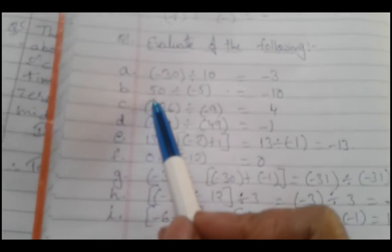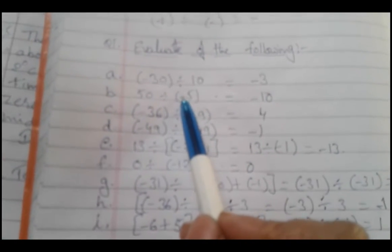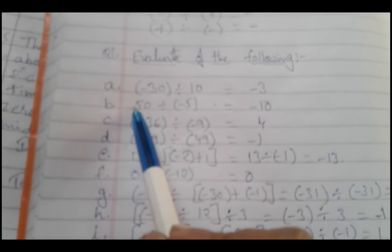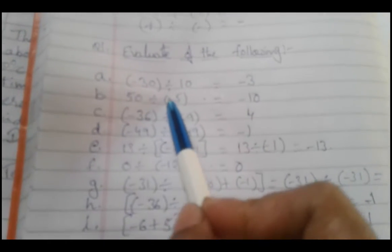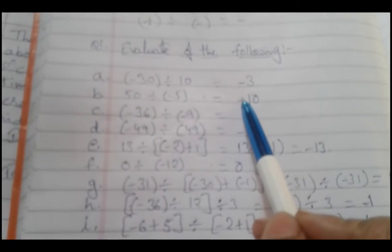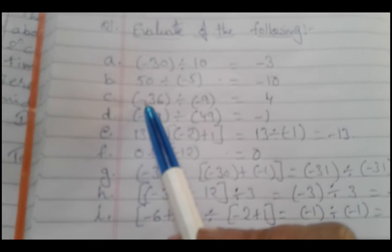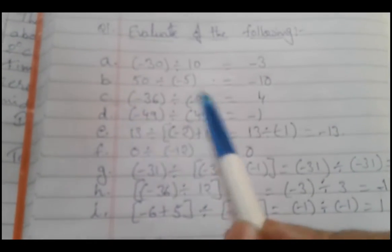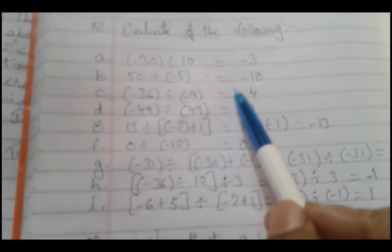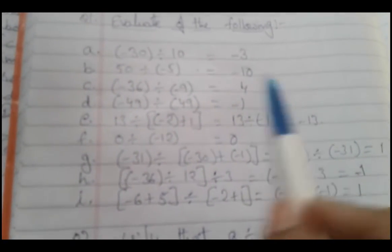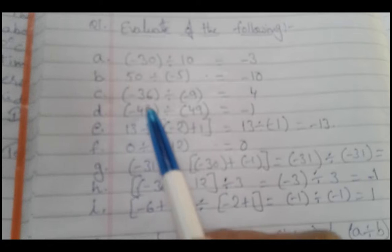In part (b), 50 divided by minus 5 — again one is positive and one is negative, so we get a negative integer only. In part (c), both are negative, so we get a positive sign.